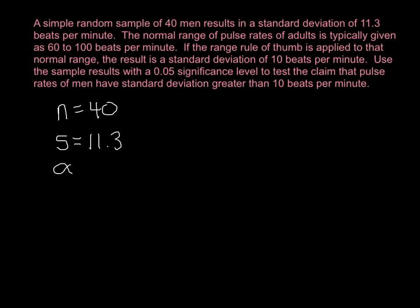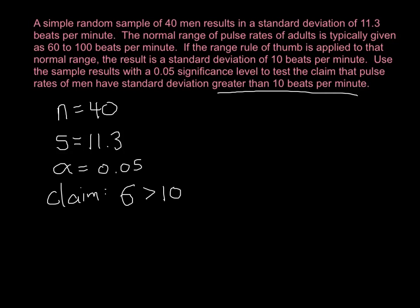Use the sample results with a 0.05 significance level to test the claim that pulse rates of men have a standard deviation greater than 10 beats per minute. I'm looking for a significance level, and I find 0.05. My claim is that the population standard deviation is greater than 10. So I use that to write my null and my alternative hypotheses. Since we have a greater than sign, that is going to be a part of my alternative hypothesis. My null hypothesis is that the population standard deviation is equal to 10.